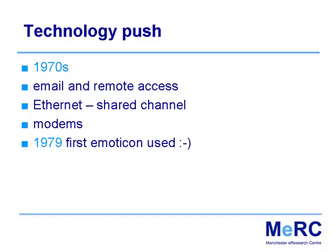We get modems — modulators and demodulators. This was a real breakthrough because it translates a digital signal into an analogue signal. All the world's telephone networks were already there — that infrastructure was already all over the world and was analogue. This meant that computers could now talk to each other down ordinary telephone lines instead of having to have special networks put in place.